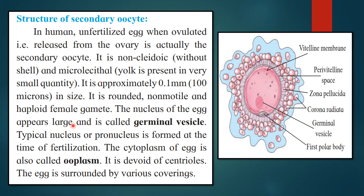The nucleus of the egg appears large and is called the germinal vesicle. As you can see in the diagram, the nucleus is large. This is not a matured egg but is called the secondary oocyte. A typical nucleus or pronucleus is formed at the time of fertilization. The cytoplasm of the egg is called ooplasm. It is devoid of centrioles, meaning it is not involved in cell division. The egg is surrounded by various coverings: ooplasm, germinal vesicle (nucleus), first polar body, corona radiata, zona pellucida, and vitelline membrane.